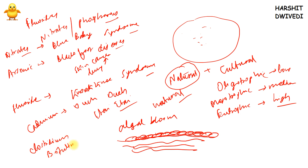Under these conditions a bacterium called Clostridium botulinum grows, producing toxins deadly to aquatic organisms, birds, and mammals. Warm water is more conducive to algal blooms. Algal blooms are also known as red tide or brown tide — if their color is red they are called red tide, and if brown they are called brown tide.